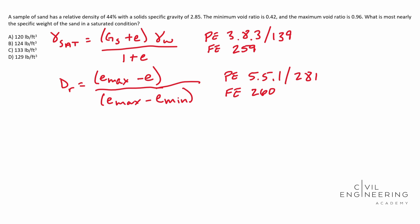So with that said, we need to solve our relative density equation for E. And when you do that, you're going to end up with E equal to negative DR times your e max minus your e min, and we're going to add e max to that.